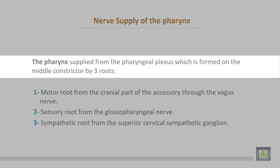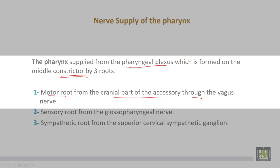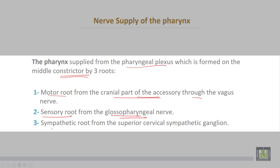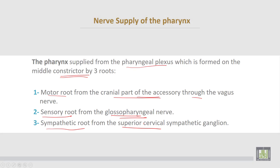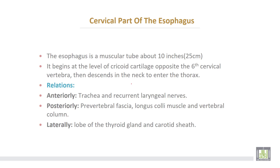The nerve supply of the pharynx comes from the pharyngeal plexus, which is formed on the middle constrictor by three roots. First, the motor root comes from the cranial part of the accessory nerve through the vagus. Second, the sensory root from the glossopharyngeal nerve. Third, the sympathetic root from the superior cervical sympathetic ganglion.